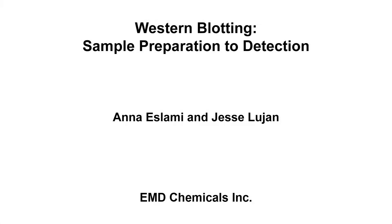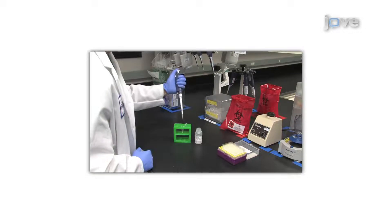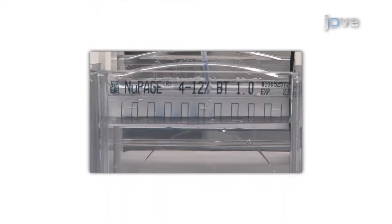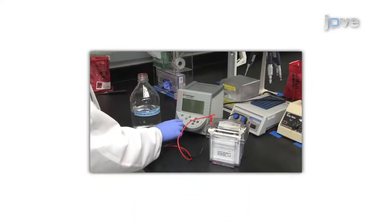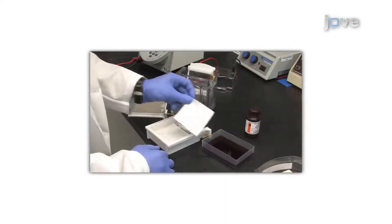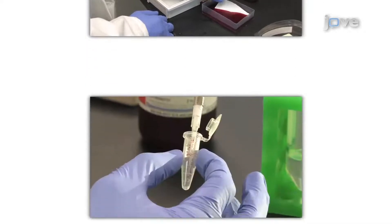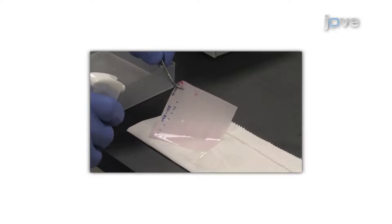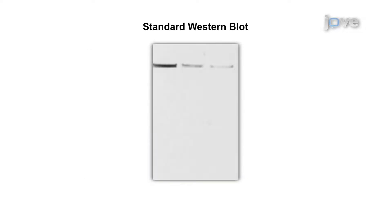The overall goal of this procedure is to demonstrate the ease of performing a Western blot when using appropriate products. Following sample preparation, proteins are separated based on size and then transferred to a solid phase. The proteins are then probed with antibodies and detected.